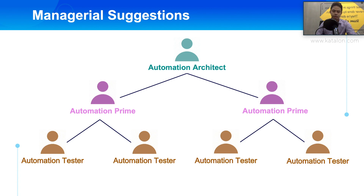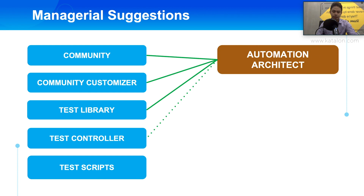Here are some suggestions from a managerial standpoint when building and deploying the framework. The key roles in an automation testing project we suggest you should have are: automation architect, automation lead, and automation tester. The automation lead can be split based on feature sets or based on regression versus new tests. When building the automation testing framework, the automation architect should be the one who picks the community and works on the community customizer and the utilities for the automation project — this is the core part of automation.